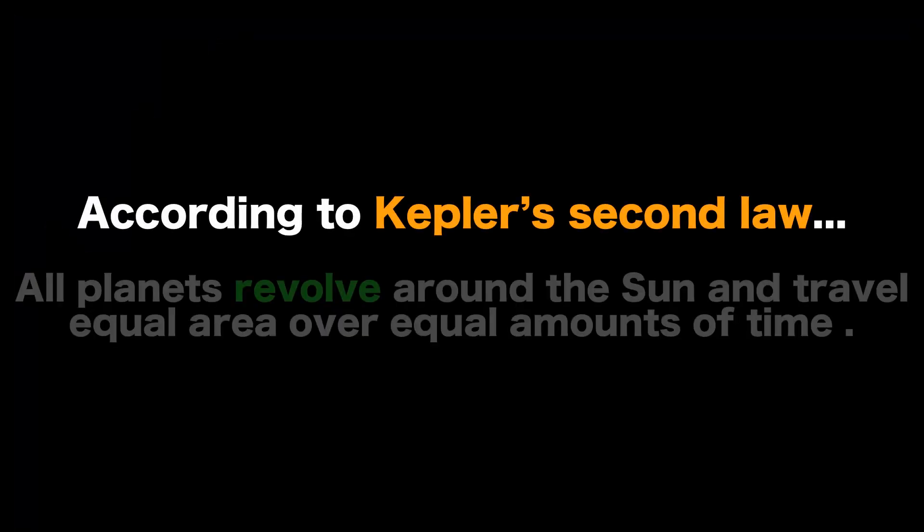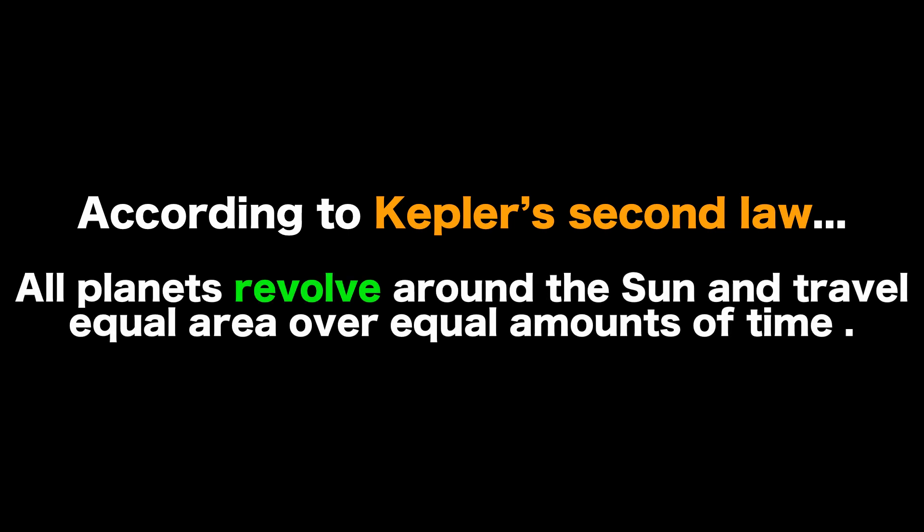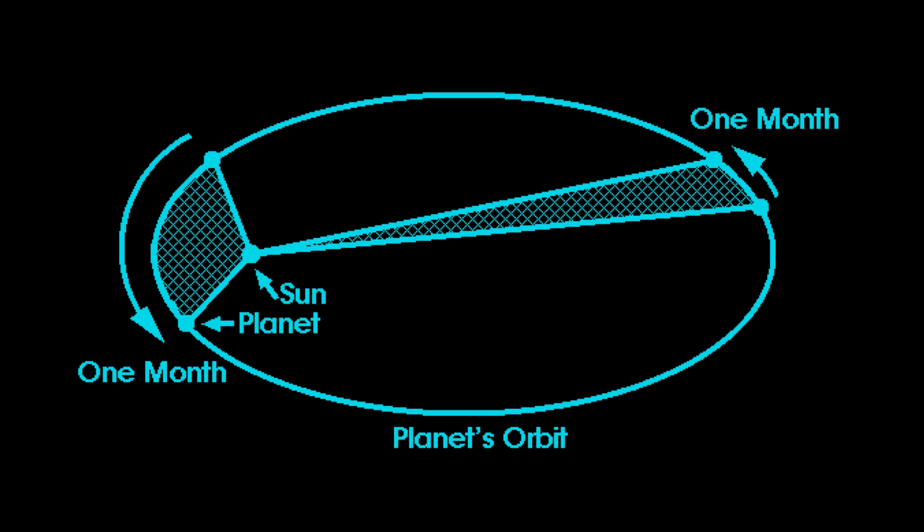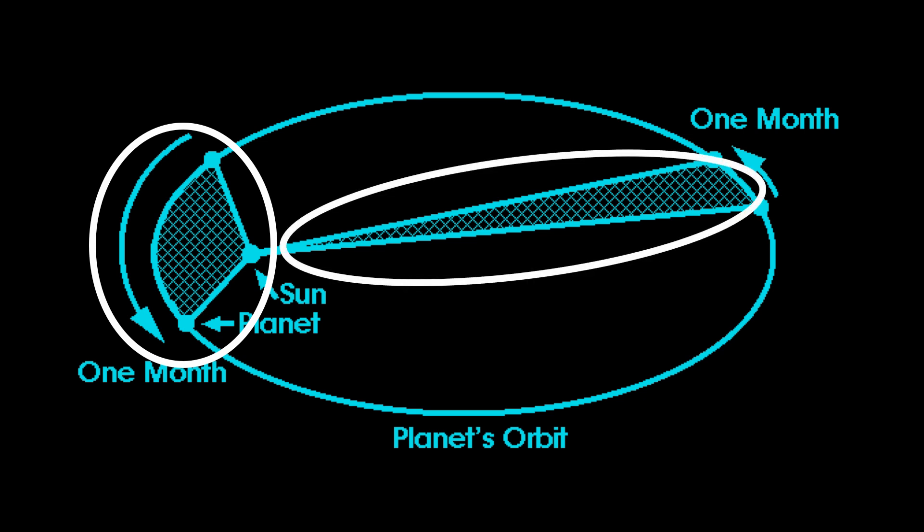Now according to Kepler's second law, all planets revolve around the sun and travel equal area over equal amounts of time. That just basically means that because we have elliptical orbits, you're not going to travel around the sun at exactly the same speed. So if you look at the left-hand side, you see that that shape that's shaded in covers one month of time. Well, if we were able to determine the area of that shaded region on the left, it would equal the area of the shaded region on the right here.